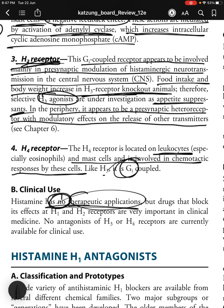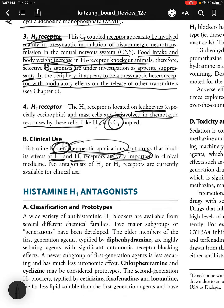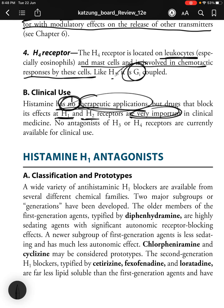Histamine has no therapeutic applications itself, but drugs blocking its effects at H1 and H2 receptors are very important in clinical medicine. No antagonists of H3 and H4 receptors are currently available for clinical use. H1 blockers come from several chemical families in two major generations: first generation agents typified by diphenhydramine are highly sedating with significant autonomic receptor blocking effects.